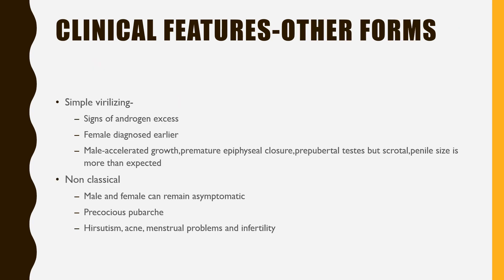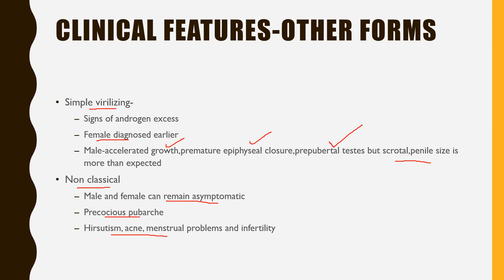Other forms with some enzyme activity present later. Simple virilizing form shows signs of androgen excess; females are diagnosed earlier, while males are generally detected around 5 to 7 years of age, characterized by accelerated growth but premature epiphyseal closure leading to reduced adult height. Scrotal and penile size can be enlarged but testicular size remains prepubertal — penile size and testicular size will be discordant. Non-classical varieties may present with precocious pubarche, hirsutism, acne, menstrual problems, and sometimes infertility.